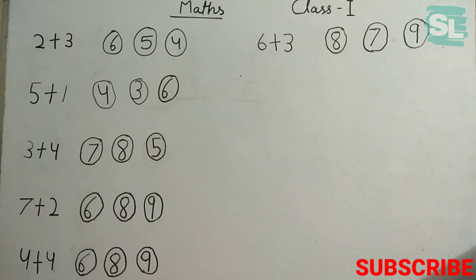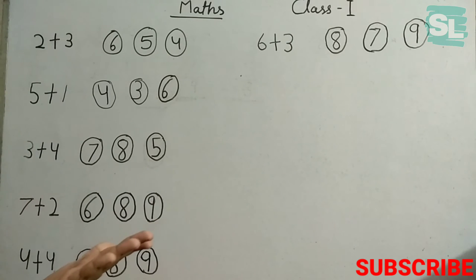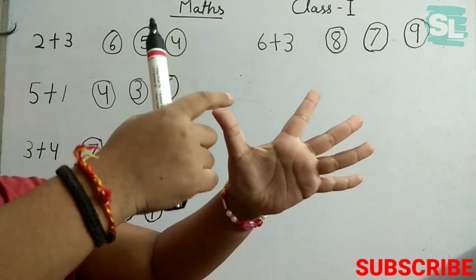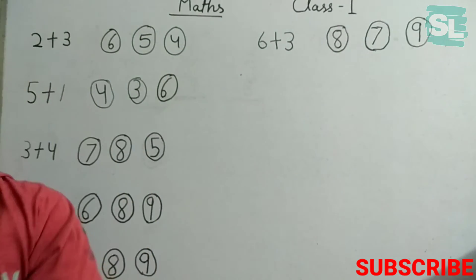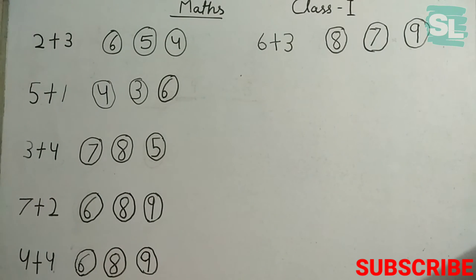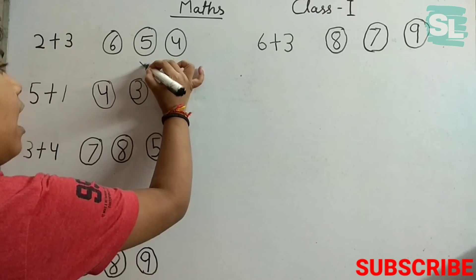Our next question is 2 plus 3. We have 2 countings plus 3. We have 2, then 3, 4 and 5. So if we add 3 and 2 there will be 5. Here is our answer, 5.